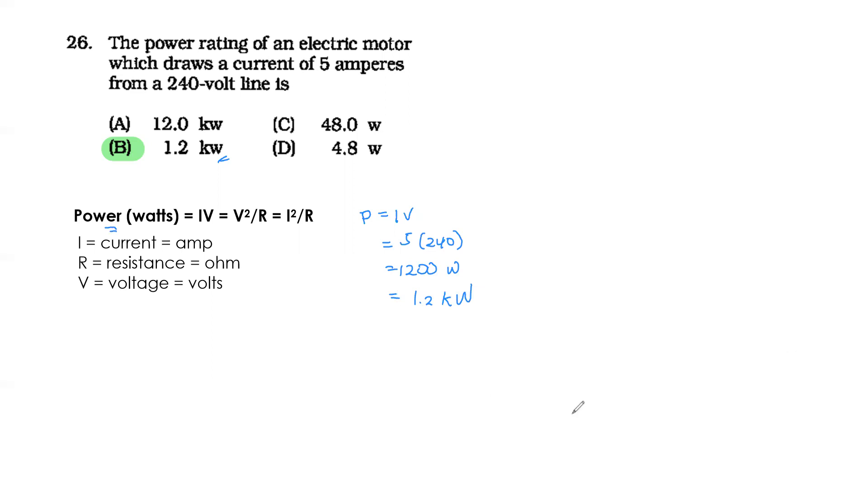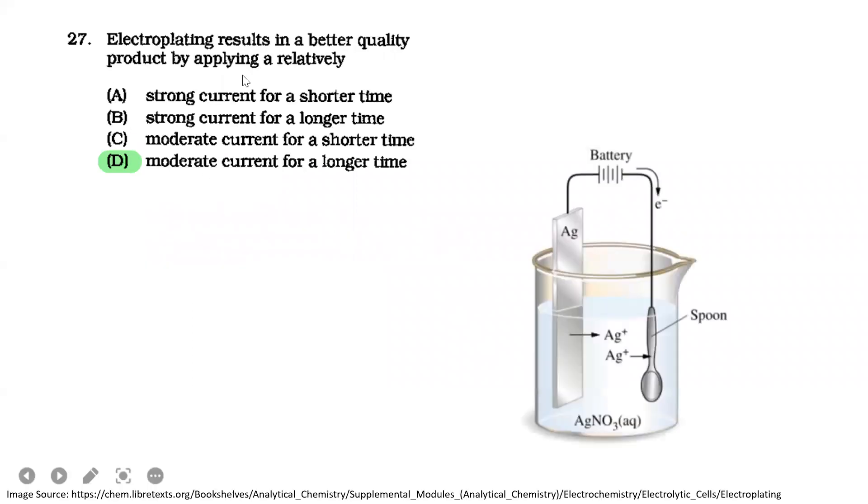Next. Electroplating results in a better quality product by applying a relatively moderate current for a longer time. I read about this, but there's no direct mention of needing moderate current for a longer time. Anyway, what is electroplating? Electroplating is when you have an anode and cathode, and usually the anode transfers.